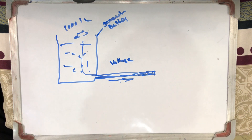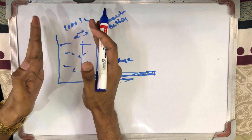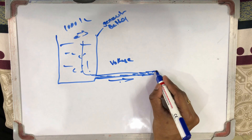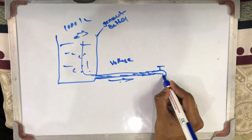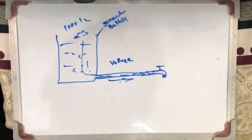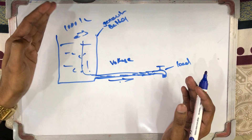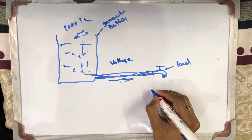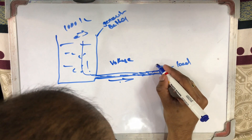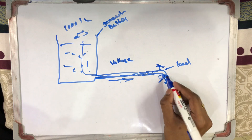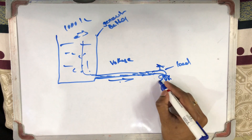We have voltage here, but we don't necessarily have current flowing. This is because we have no load connected. The current is not determined by the source alone — that is the load's role. If I don't have a tap — if I don't have a load item — we don't have a load or cable. We have voltage, but to get current, I will open the tap. At that point, we have a current.